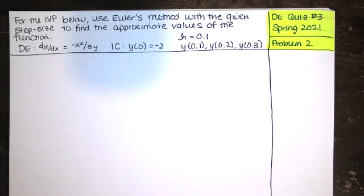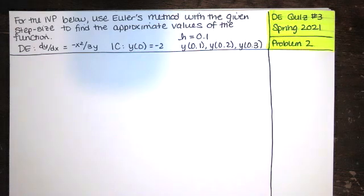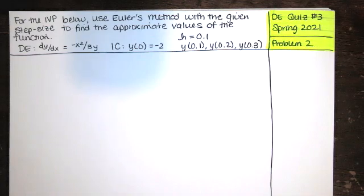In this video we solve problem number two from the differential equations quiz number three from the spring 2021 semester. We are given an initial value problem and we're asked to use Euler's method with the given step size to find approximate values of the function.